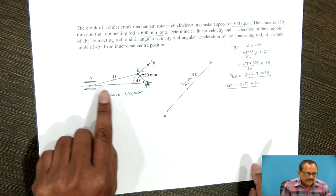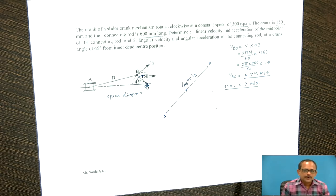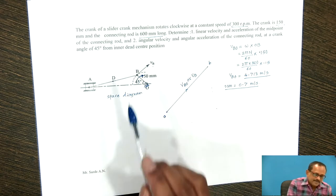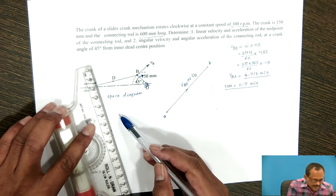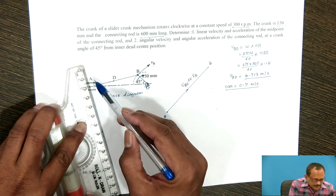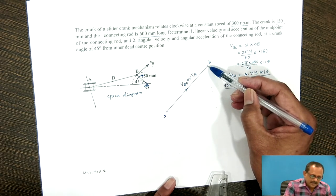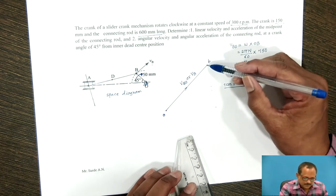For the next link AB, consider the velocity of A with respect to B. At this moment, we do not know the magnitude, but we can determine the direction. The relative velocity of any point with respect to another point, when both points lie on the same link, will be perpendicular to the line joining points A and B. So, the velocity of A with respect to B has an unknown magnitude but a direction perpendicular to AB. From point B, draw a vector perpendicular to link AB.